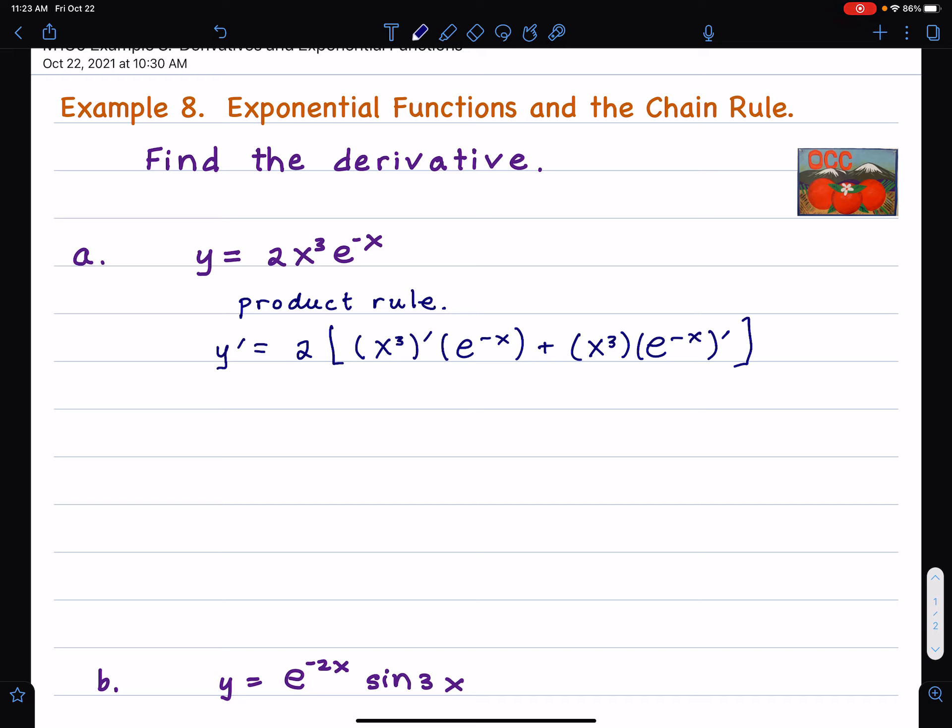When I have two factors, I take the derivative of one of the factors, leave the other alone. Then I leave it alone, and then take the derivative. Derivative, leave alone. Leave alone, derivative. Could reverse the order, because we have plus - you could leave alone derivative, plus derivative leave alone.